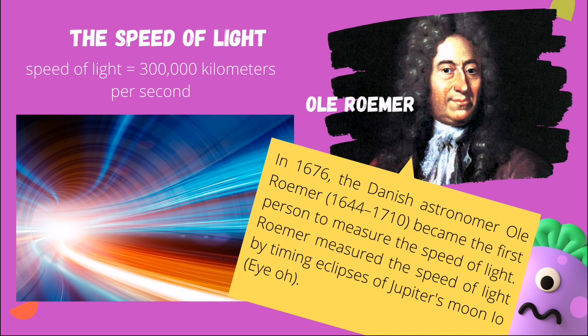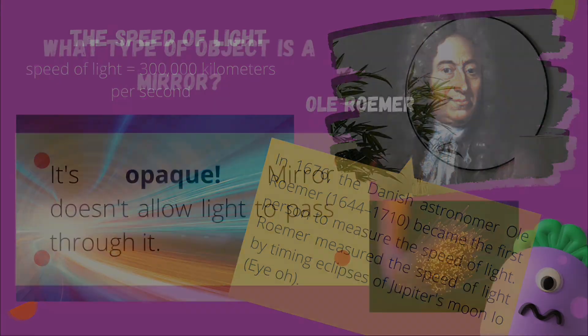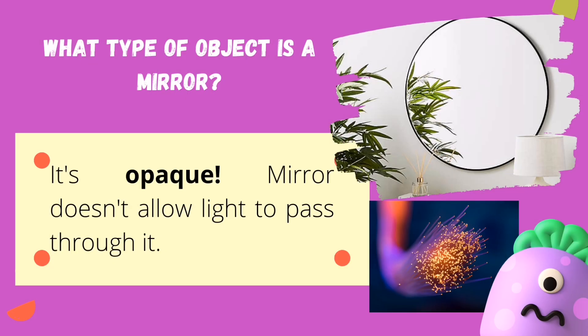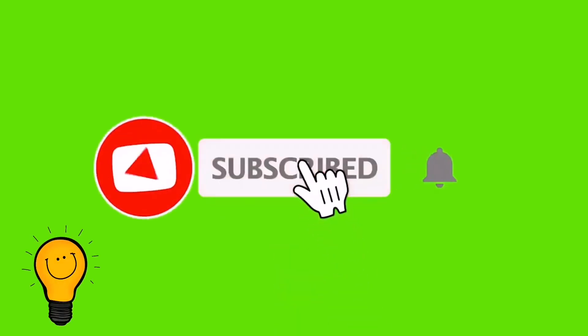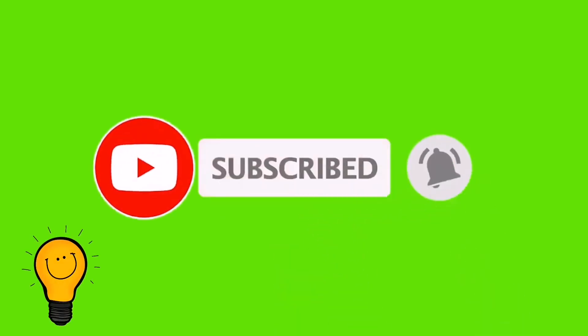Ole Rømer measured the speed of light by timing eclipses of Jupiter's moon Io. Now, what type of object is a mirror? It is undoubtedly opaque because it does not allow light to pass through from one side to the other. Yet we can clearly see the image of an object placed in front of a mirror, due to the reflection of light. If you learned something new today, drop your comments below, like and share this video, and subscribe.